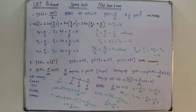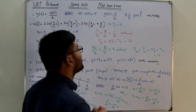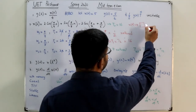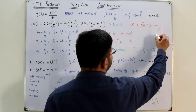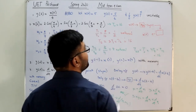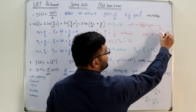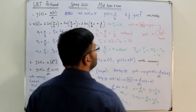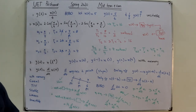For invertibility: if the system takes the derivative, the inverse system would perform integration. So if we feed y(t) into an integrator, we recover x(t). An inverse system exists, meaning this system is invertible. That completes all properties for question 4.